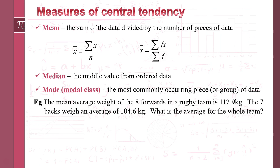So we've got the mean average weight of eight forwards in a rugby team is 112.9 kg. The seven backs weigh an average of 104.6 kg. What's the average for the whole team? Again, this is just to do with getting used to the notation. We know that for the forwards, the average is the sum of x over n, and we know that one there is 112.9 and we've got eight pieces of data, so therefore the total weight of the forwards is simply going to be eight times 112.9, so it's 903.2.